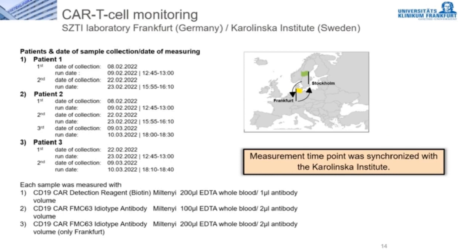Moving to the second part of the presentation: for stem cells, T cells, and many other immune cells in Germany and Austria, external quality controls (EQAs) are offered in hematology and immunology. Since no interlaboratory comparisons are officially offered for CAR T-cell analysis, we performed comparative measurements with the Karolinska Institute in Stockholm. All patients whose samples we received were treated with Yescarta. In total we performed seven comparative measurements on three patients, using the original antibody from Miltenyi and the new FMC63 idiotype antibody. Measurement was synchronized in time with our colleagues from Sweden to account for the decline in CAR T-cells seen with delayed measurement.